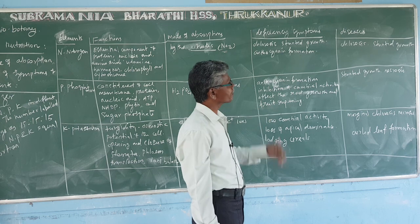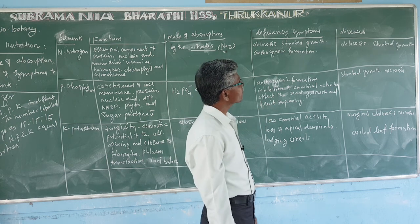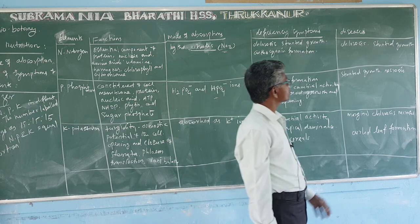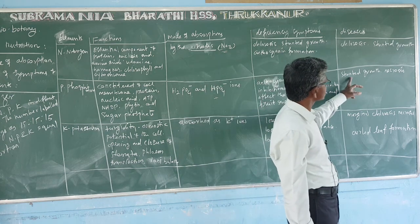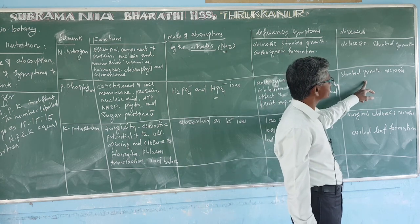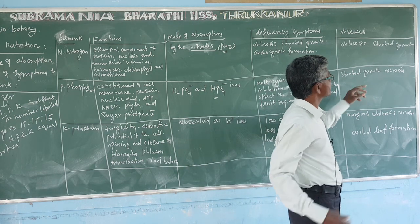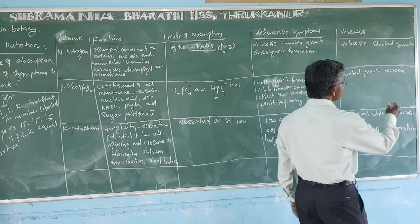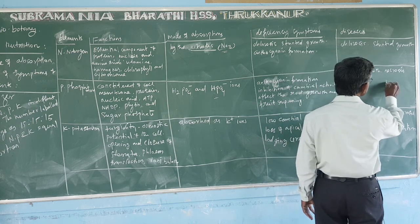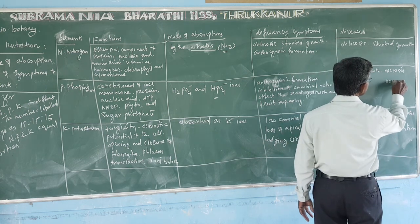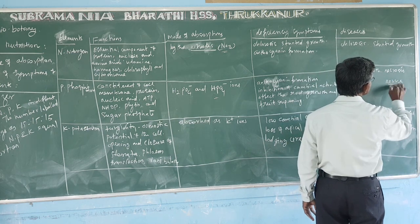Fruit ripening is also affected. Stunted root growth, stunted stem growth, and necrosis are observed. Necrosis means damage of new cells.